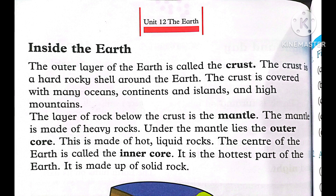The layer of rock below the crust is called the mantle. The mantle is made of heavy rocks. Under the mantle lies the outer core, which is made of hot liquid rocks. The center of the Earth is called the inner core.